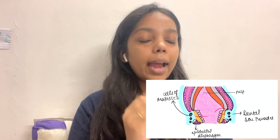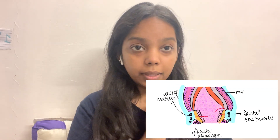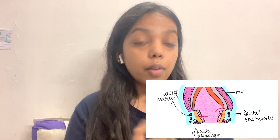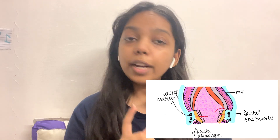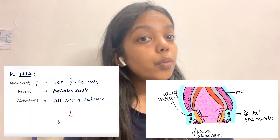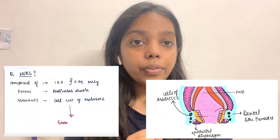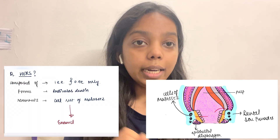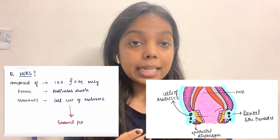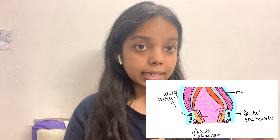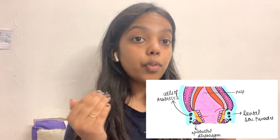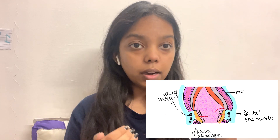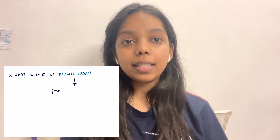HERS is composed of only the outer and inner enamel epithelium. It forms the radicular dentine. The remnant of HERS is called the cell rests of Malassez, and these cell rests of Malassez will later form the enamel pulp.